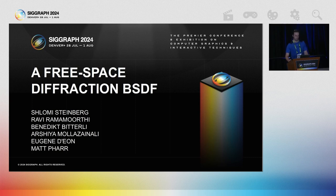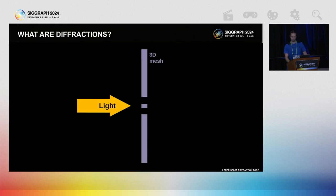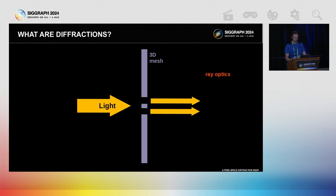I'm going to talk about free space diffractions. What are free space diffractions? Consider the following: light is incident upon a simple mesh that has a couple of openings cut out in the center. In your typical ray optical path tracer, some light rays would pass through the openings and continue to travel with directions remaining unchanged.